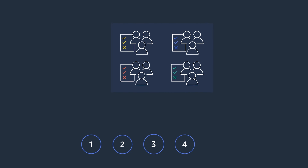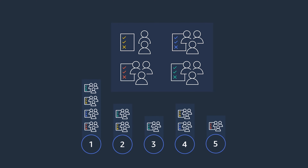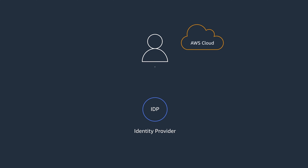For example, if someone leaves our organization, we can revoke access to all of our applications and services, including AWS, from one location. This also reduces the need for multiple credentials for that particular user, so users will love that. So the first tip is: avoid creating AWS IAM users, and instead rely on a centralized identity provider for federated access to AWS.